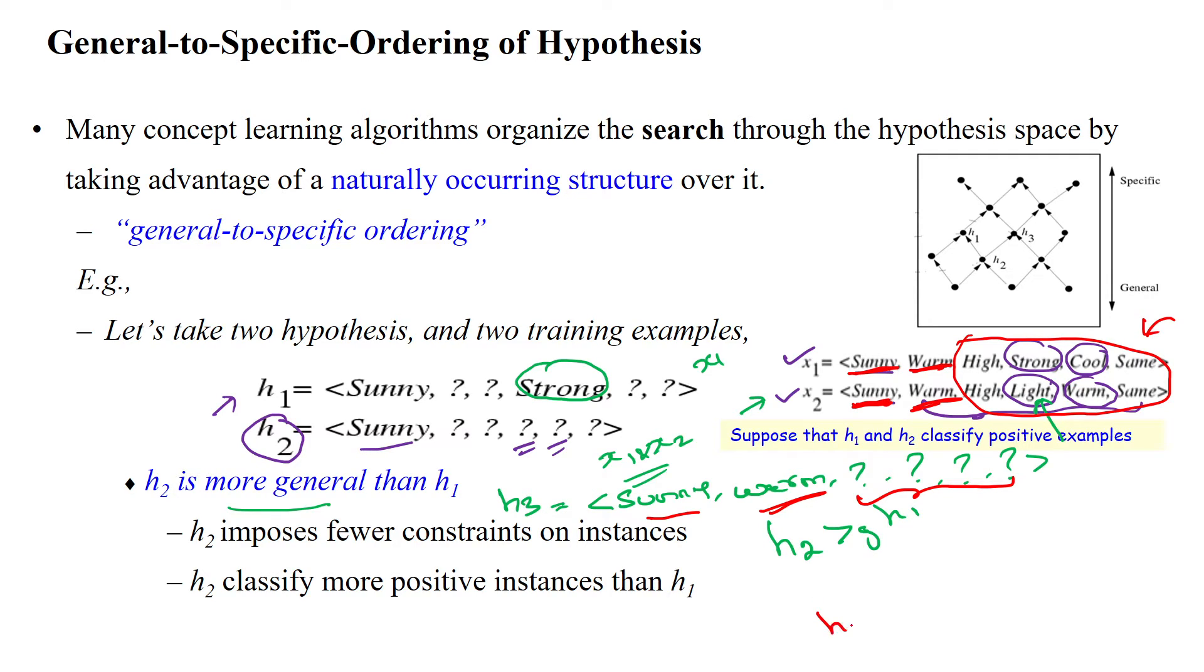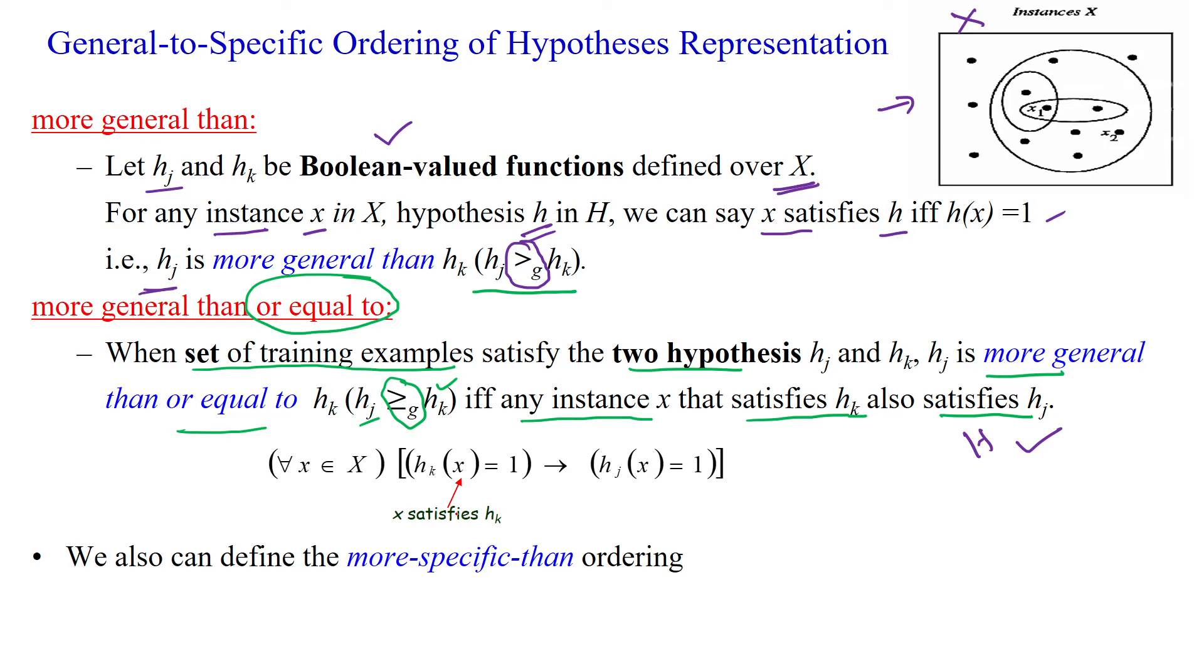So here h2 is greater than, that means more general than or equal to h3. So this is the notation we can use when two hypotheses satisfy all the examples given in the instance space X.